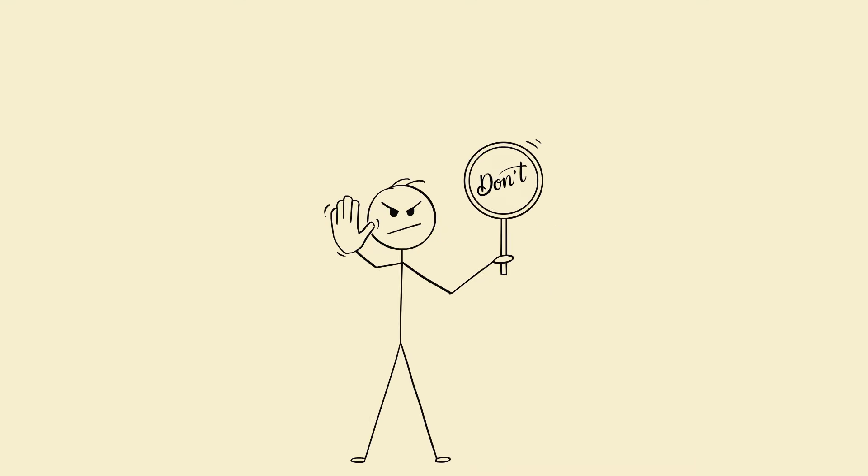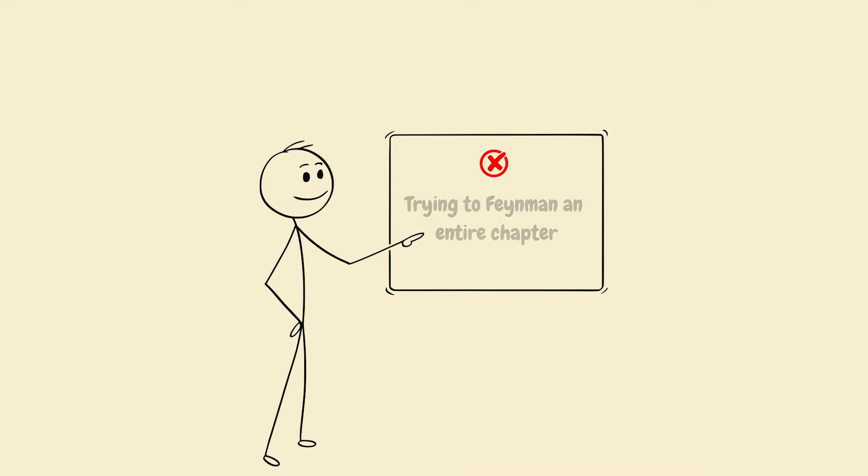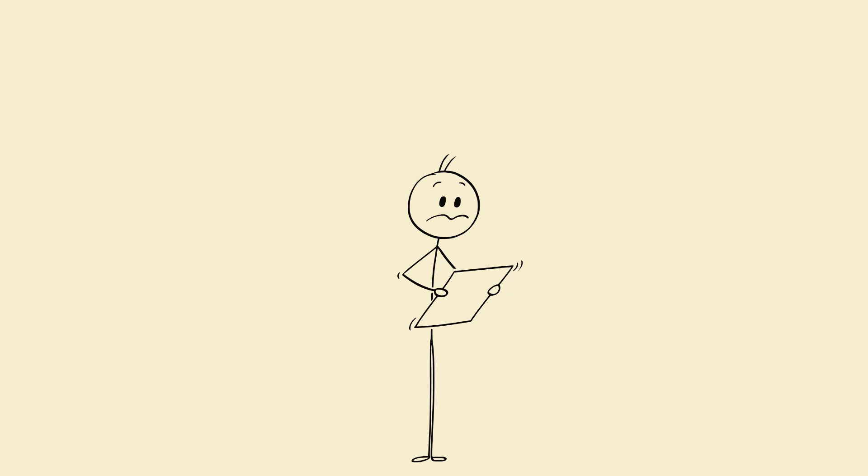Common mistakes don't do this. Trying to Feynman an entire chapter. Using fancy words to feel smart. Writing instead of explaining. Avoiding confusion. Confusion is not the enemy. Avoiding confusion is.